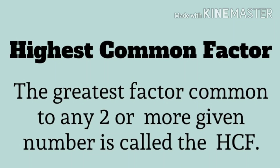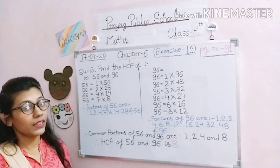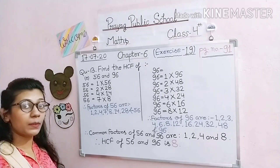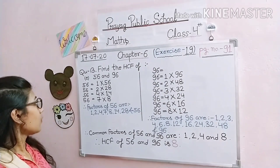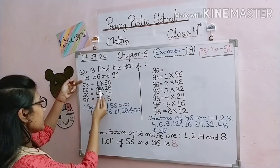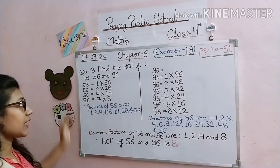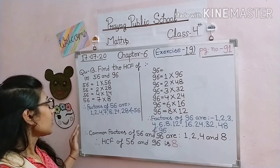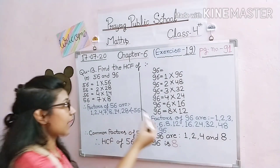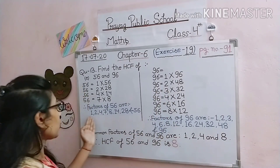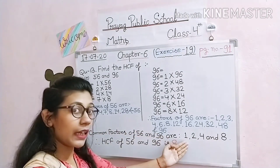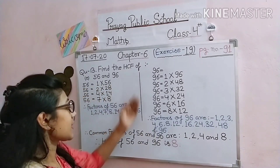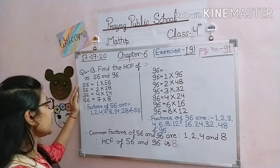The Highest Common Factor (HCF) is the greatest factor common to any two or more given numbers. Let's do the sums of Exercise question number 13 — find the HCF. Question E: find the HCF of 56 and 96. First, we'll find the factors of 56, then the factors of 96, then identify the common factors, and the greatest among those will be the HCF.